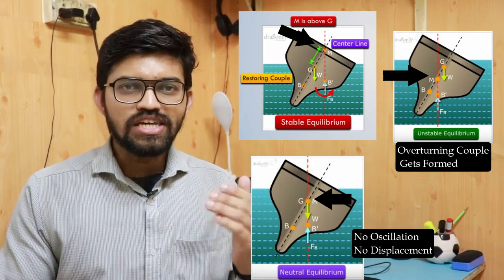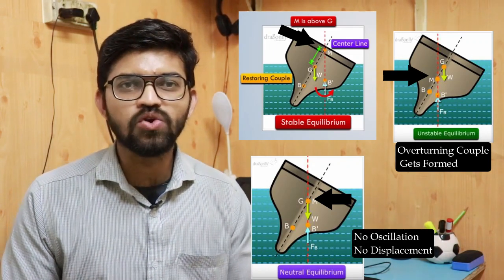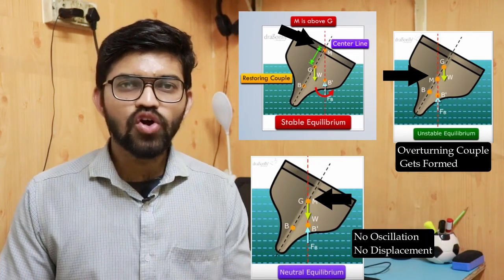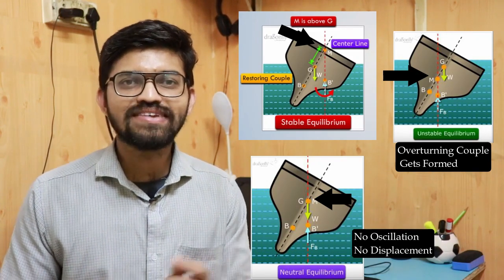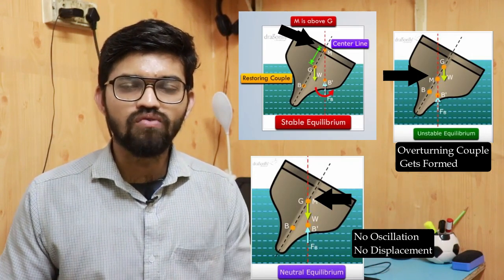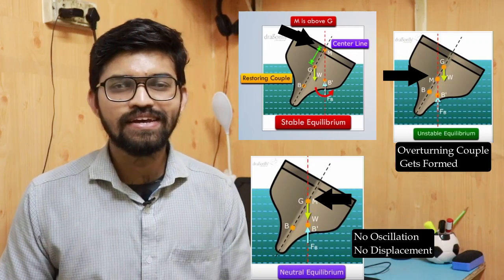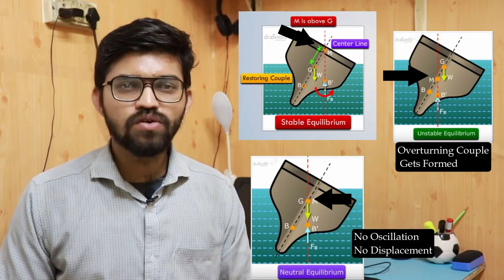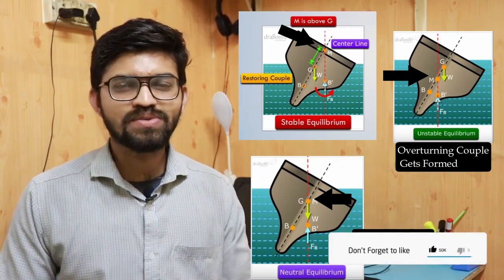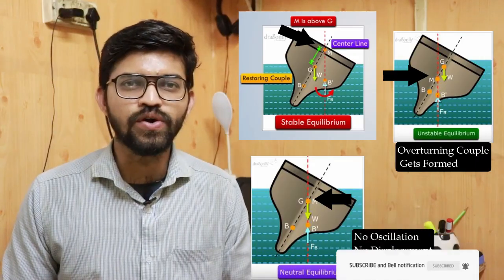Metacentric height plays a very important key role while designing passenger ships. The greater the metacentric height, the greater the stability of the floating body in the fluid. I hope you liked this video — if you have any doubts or queries, please comment below, subscribe to Engineers Academy, and thank you for watching.